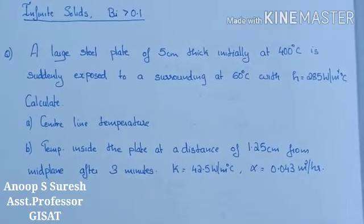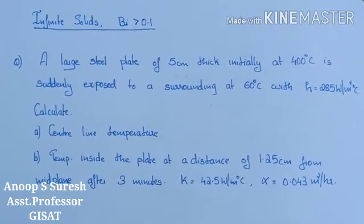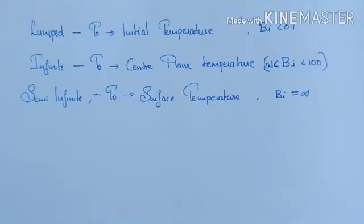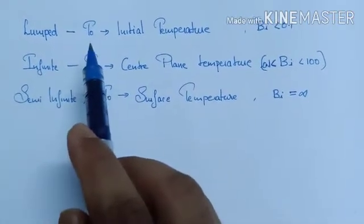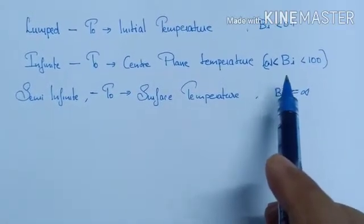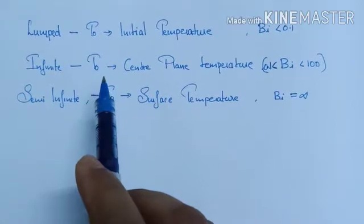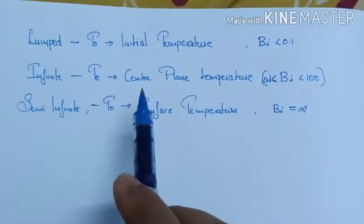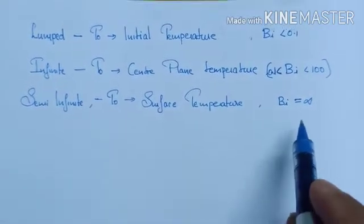Hi students, we are going to discuss a numerical problem with infinite solids. We already have the lumped capacity method — this is for Biot number less than 0.1. For the infinite solid case, T0 is the initial temperature, and we consider the center plane temperature and the body thickness. For semi-infinite solids, the Biot number is infinity, and T0 is the surface temperature.